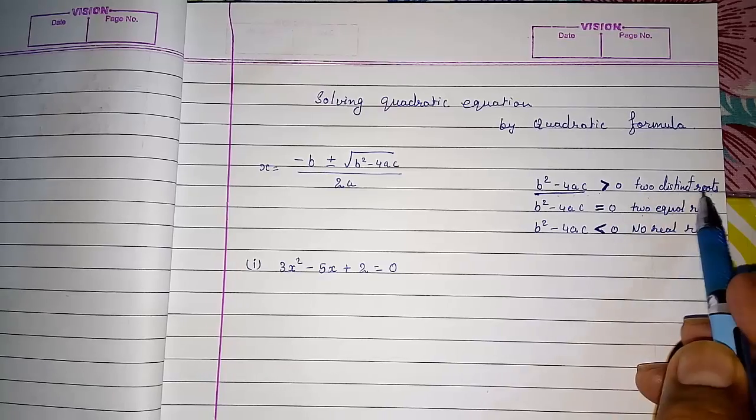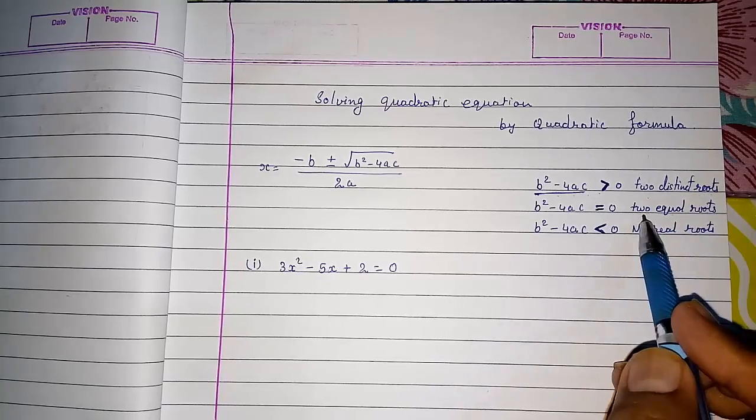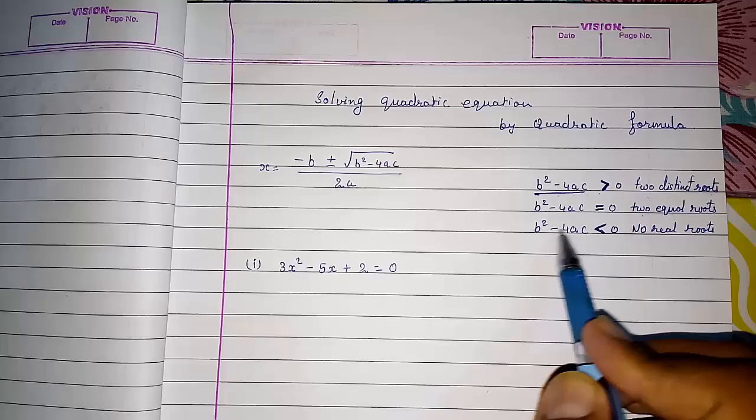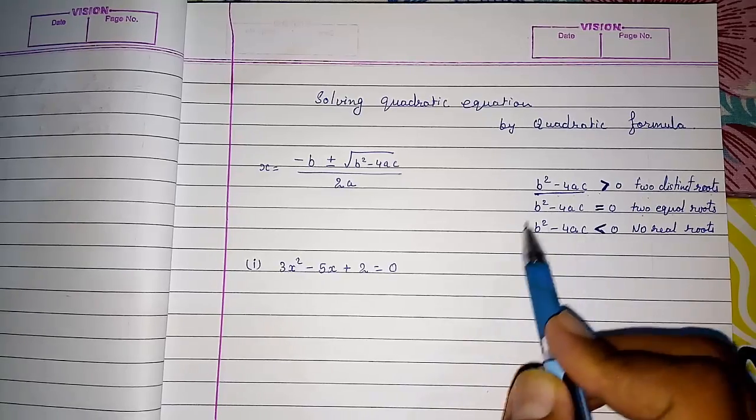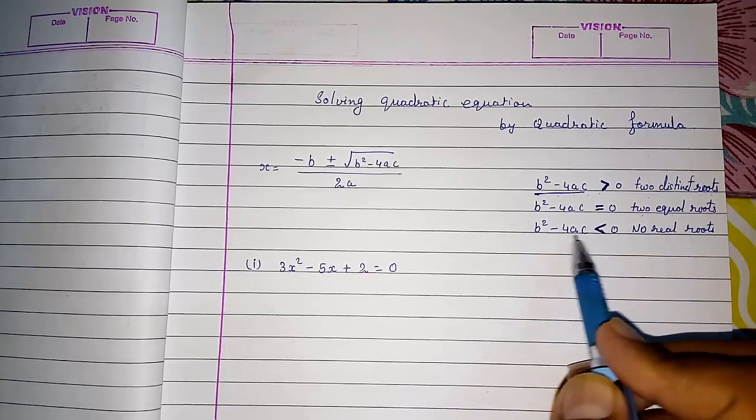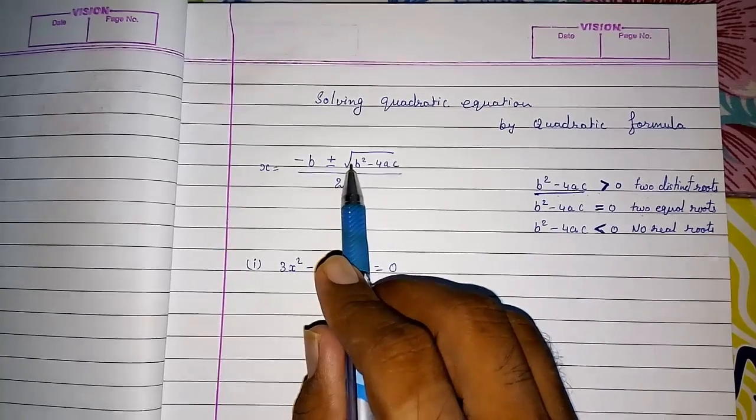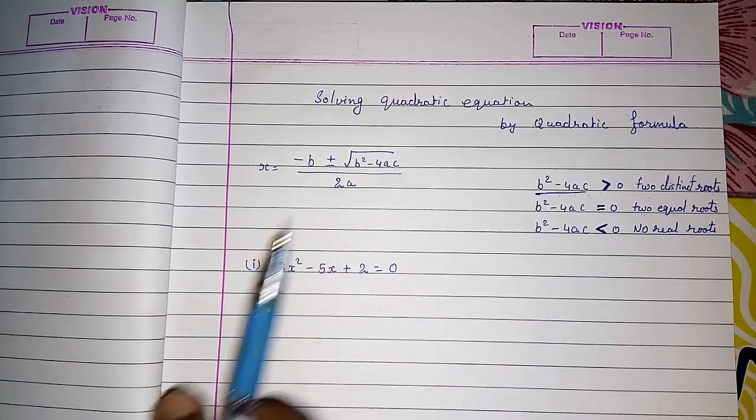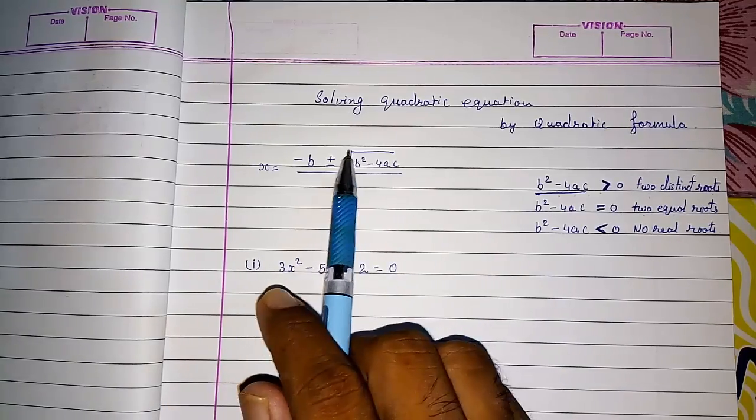Two distinct roots means two different roots. Here two equal roots, and if b square minus 4ac is less than zero means this is a negative number, then no real root. If we are getting a negative number we cannot find root of any negative number. So directly we come to know that there will be no roots.